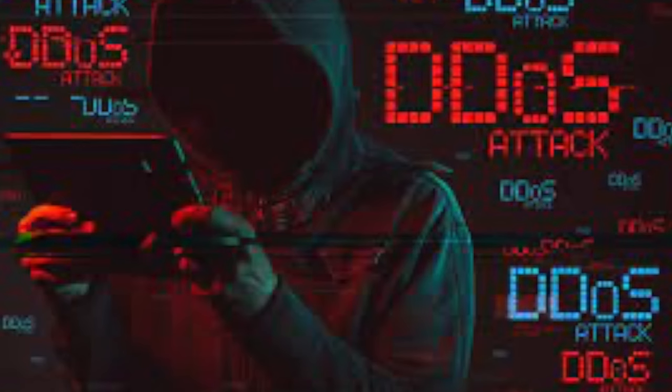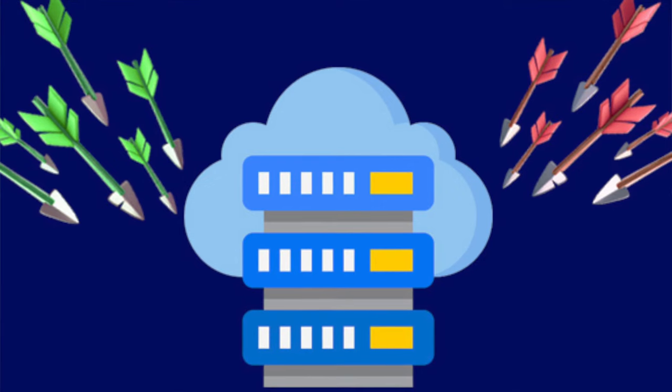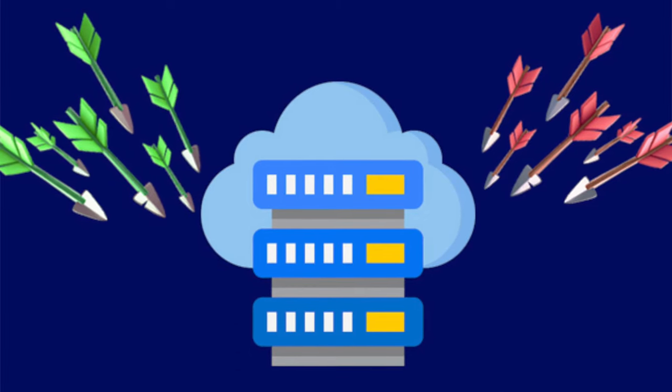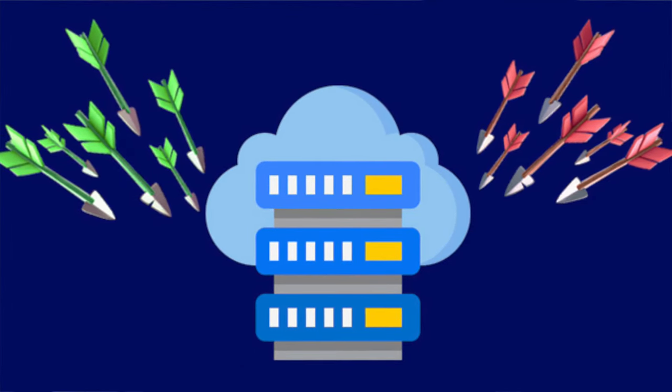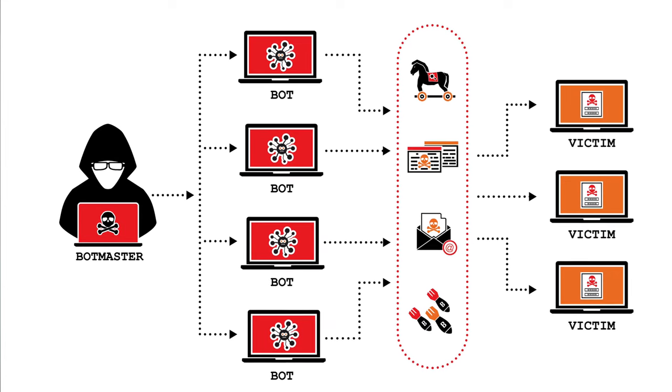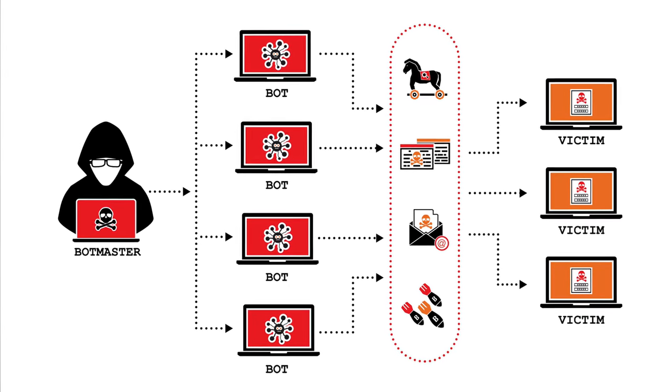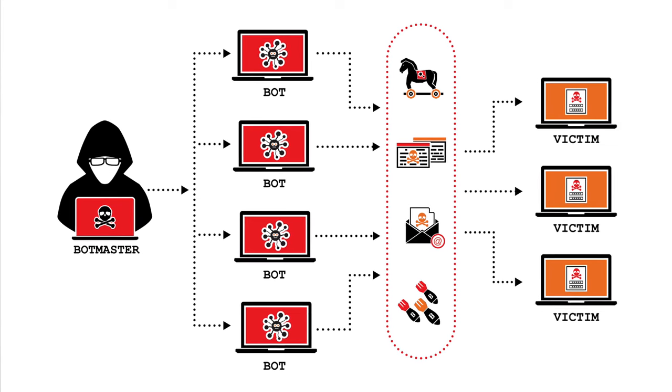Now let's talk about DDoS — distributed denial of service. The whole point of a DDoS attack is to bring a service down, generally an online service or a website, making it unavailable. The main way they do that is by overwhelming that website with traffic from lots of places — from multiple sources. Hence it's distributed. There could be a pool of hundreds or thousands of computers all being used to send multiple ping commands to a website to try to bring it down.